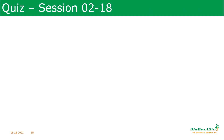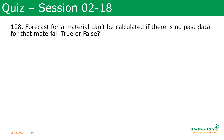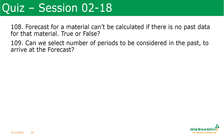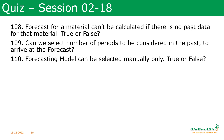Now let us see some quiz for this session. Forecast for a material cannot be calculated if there is no past data for the material — true or false? Can we select the number of periods to be considered in the past to arrive at the forecast? And forecasting model can be selected manually only — true or false? These are some basic quizzes just for you to refresh the knowledge we gained here.